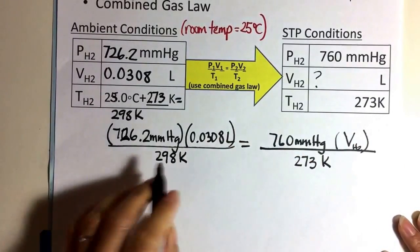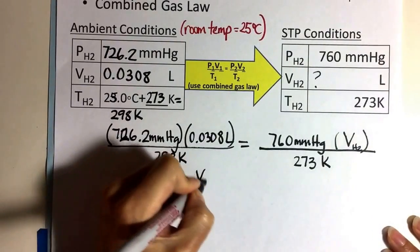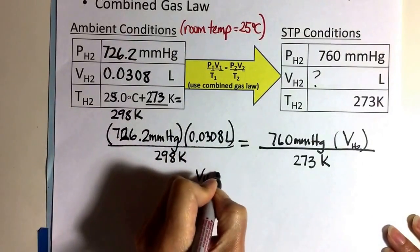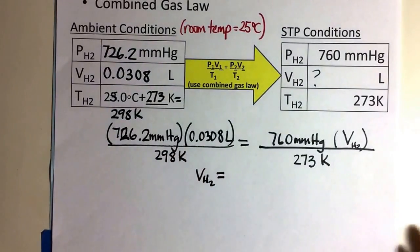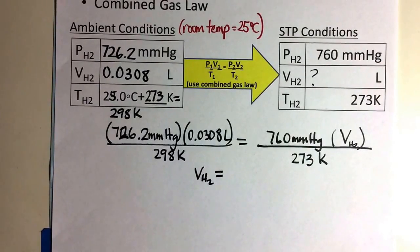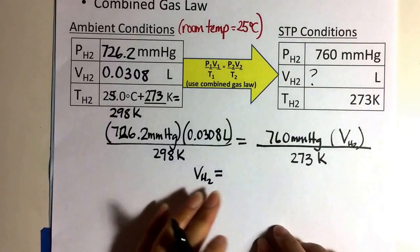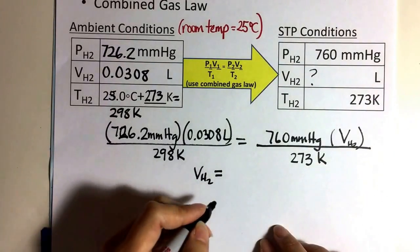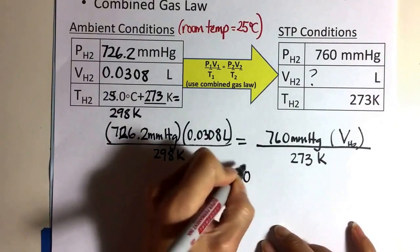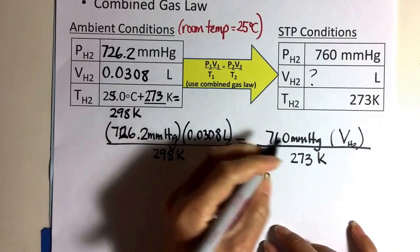So now once I solve for my volume of my hydrogen gas at STP condition, I can then substitute it into my ratio of volume to moles. So now when I solve this, I get 0.0270 liters.